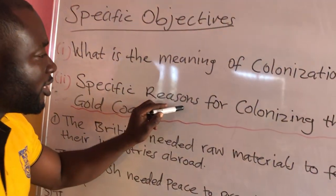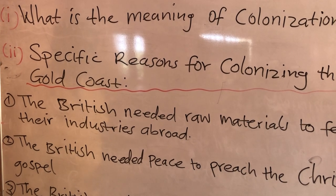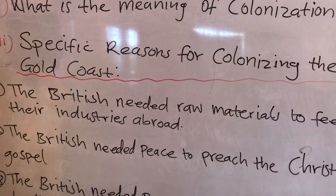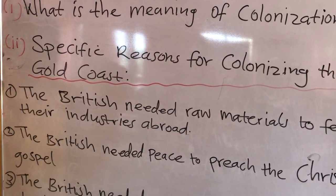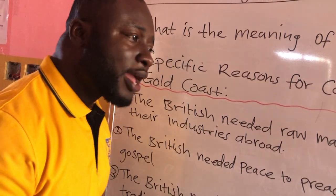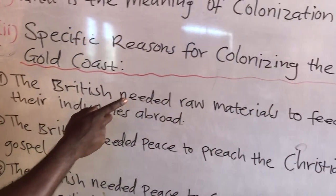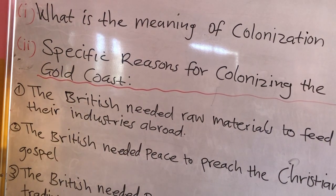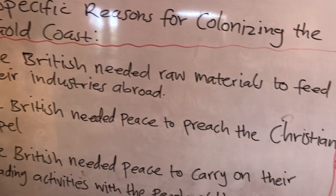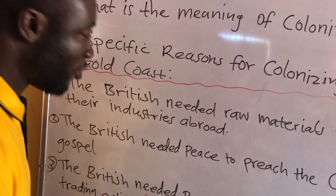What are some of the specific reasons for colonizing the Gold Coast? Why were the British so much interested in colonizing the Gold Coast? The Portuguese were the first to come to the Gold Coast, led by Don Diego de Zambuja — the first to arrive on the soil of Africa. But we all know that the British were our colonial masters. One reason was that the British needed raw materials to feed their industries abroad, because they were already developed.